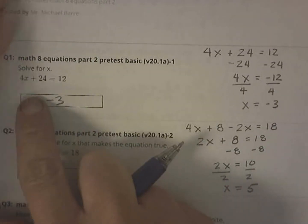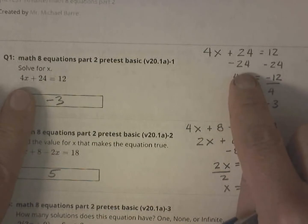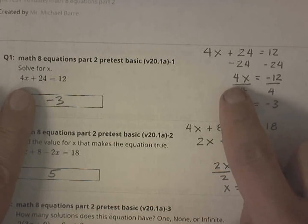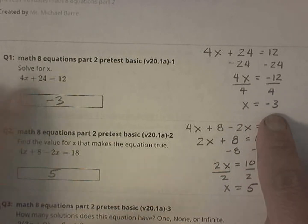Alright, so we're going to solve this equation. I wrote it over here. I started by subtracting 24 from both sides. That left me with 4x equals negative 12. And I divided both sides by 4, so x equals negative 3. It's a two-step equation.